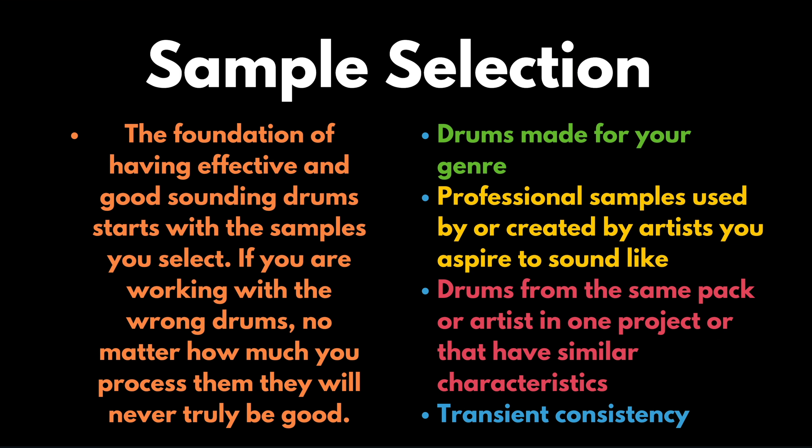Sample selection is the foundation of having effective and good-sounding drums — if you're working with the wrong drums, no matter how much you process them, they will never truly be good. Start with drums for your genre: professional samples used by or created by artists you aspire to sound like, and ideally from the same sample pack or artist so they have cohesive characteristics. If I'm using Decap Drums, I'll stick to all Decap Drums from that specific pack so everything is cohesive.